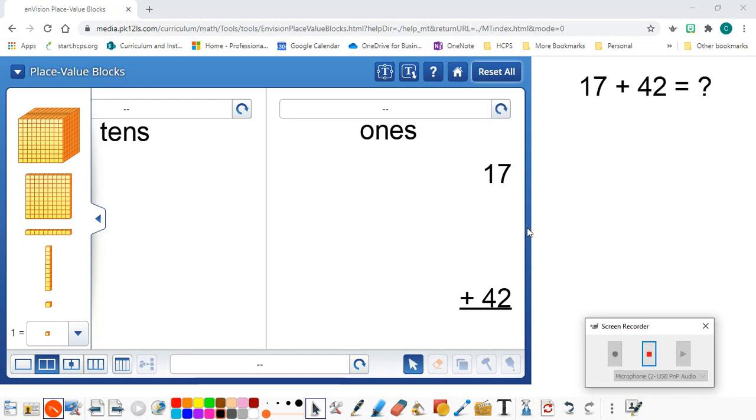Right now, we are going to use the Place Value Blocks Digital Math Tool from Savvis Realize, and we are going to solve 17 plus 42.